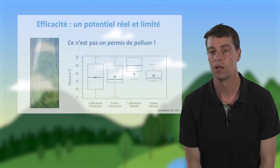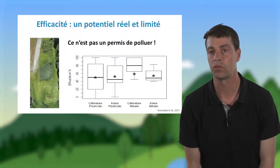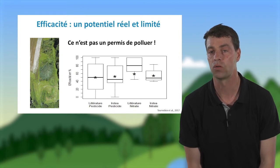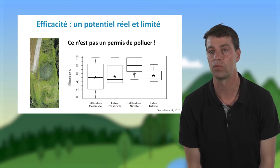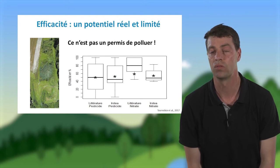En termes d'efficacité, les études de l'IRSTEA et les autres études rapportées dans la bibliographie montrent que pour l'azote, on est assez proche de 50 % de dénitrification et de rétention à l'échelle des zones tampons. Pour les pesticides, l'évaluation des études montre une médiane aux environs de 50 %, avec un écart-type entre 0 et 100 % dû au grand nombre de molécules étudiées et leur grande variabilité.